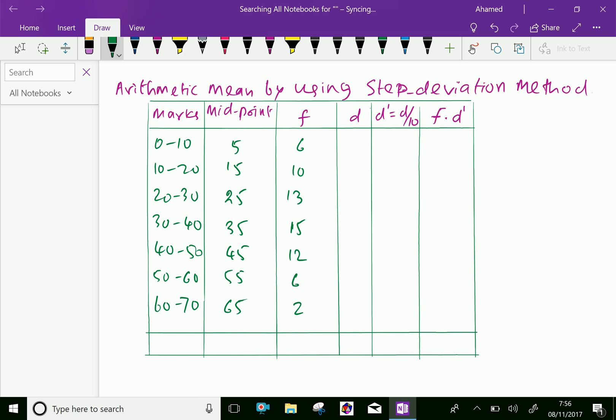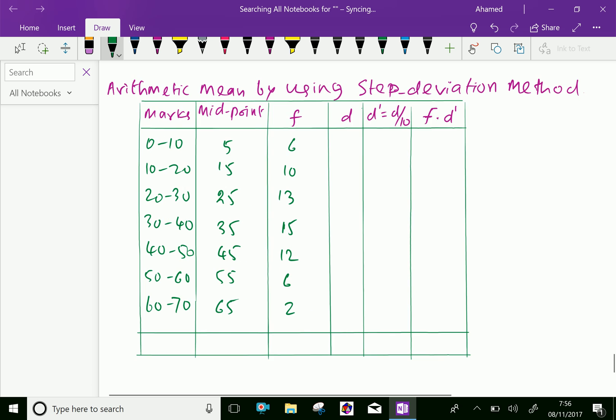Then deviation from the midpoint. Consider assumed mean as 35. Deviation from the assumed mean: 5 minus 35 is minus 30, 15 minus 35 is minus 20, 25 minus 35 is minus 10, 35 minus 35 is 0, 45 minus 35 is 10, 55 minus 35 is 20, and 65 minus 35 is 30.